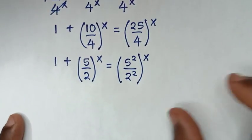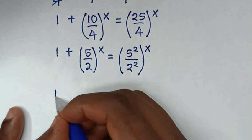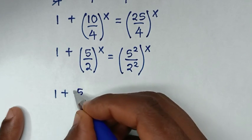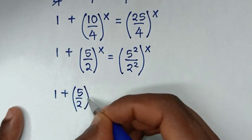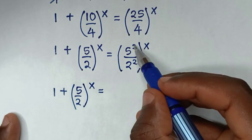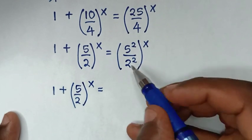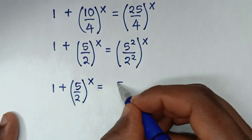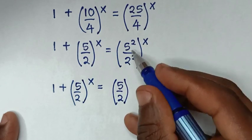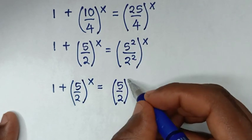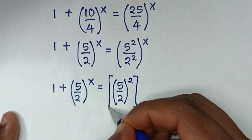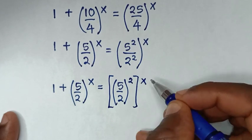So in the next step it becomes 1 plus (5/2)^x equals (5/2)^(2x). Since power of x is common, we can write (5/2)^(2x) as (5/2)^x raised to the power of 2, taking the 2 outside the bracket.